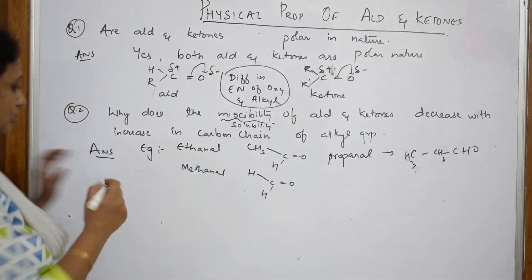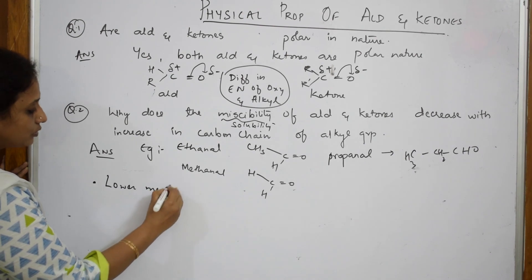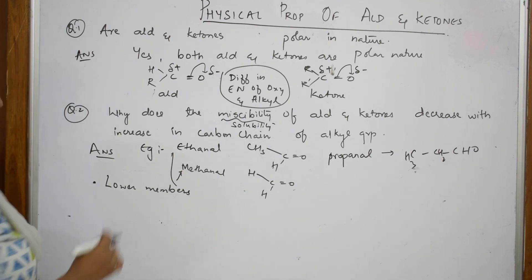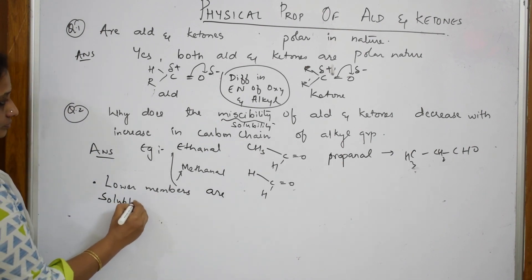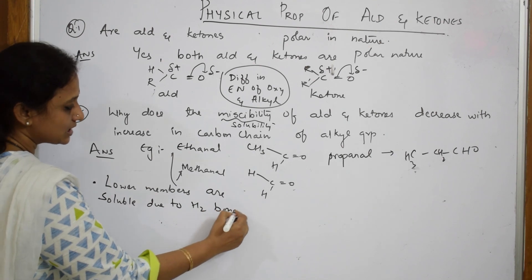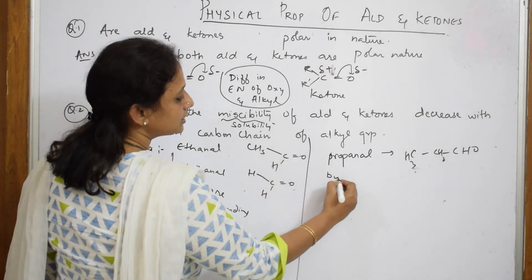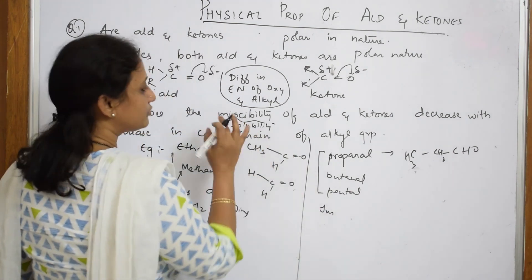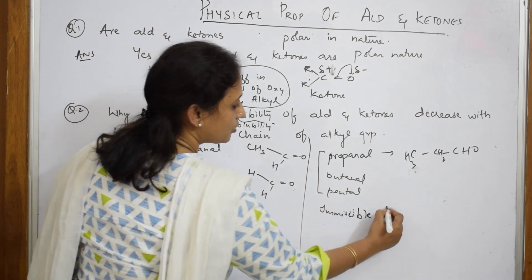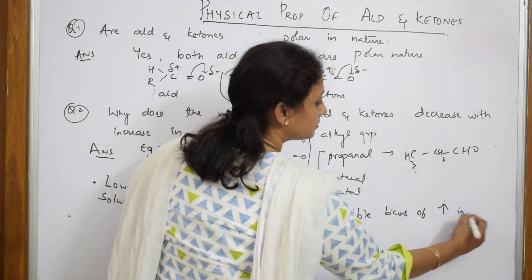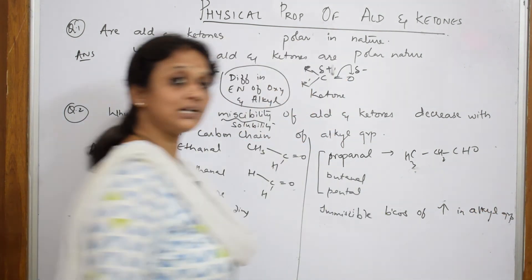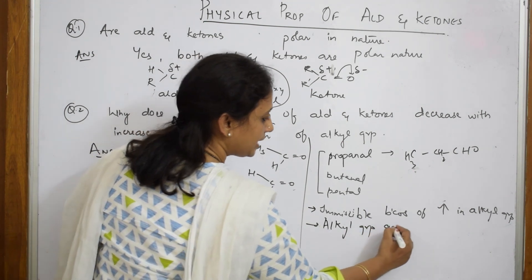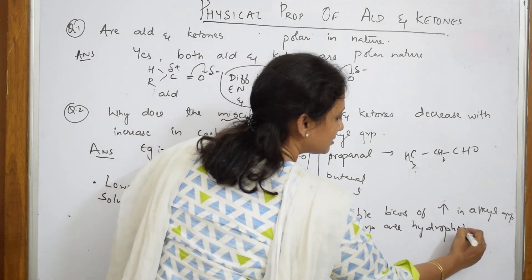For lower members — ethanal, methanal, and acetone — they are soluble due to hydrogen bonding. For higher members like propanol, butanal, pentanal, they are immiscible because of the increase in alkyl groups. Alkyl groups are hydrophobic in nature — water hating — and they will not dissolve in water.